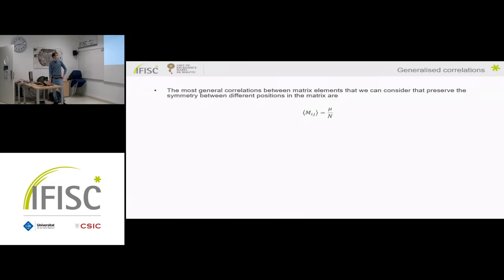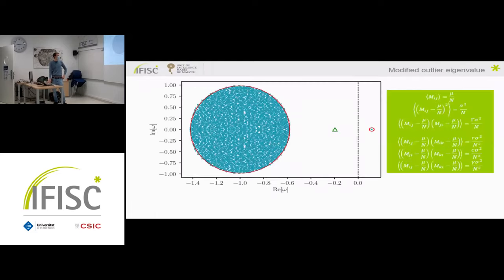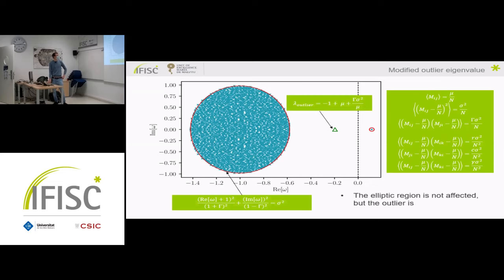We have our finite mean for each random matrix element, the same variance as before, and correlations between off-diagonal pairs. Now we introduce the possibility of correlations between elements which share a row, which share a column, and also correlations where we're mapping one row onto one column. These elements will also be correlated, with a different scaling with N in order to take a proper thermodynamic limit. It turns out that we still have an ellipse — the same universal law as before — however the location of the outlier eigenvalue is now shifted.